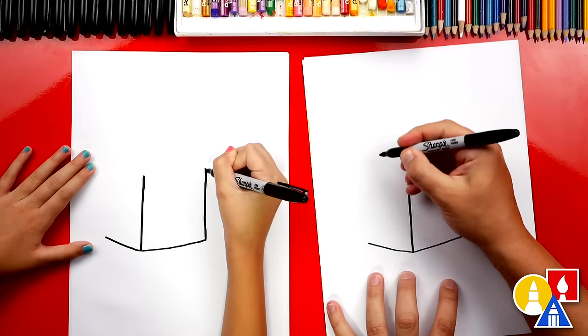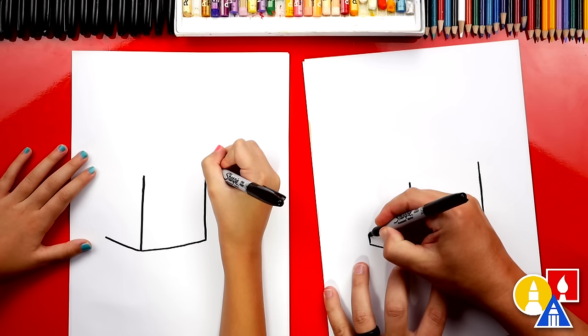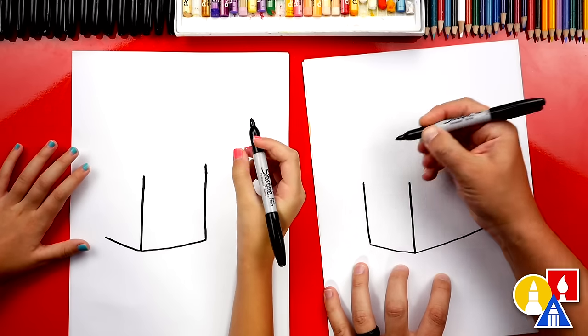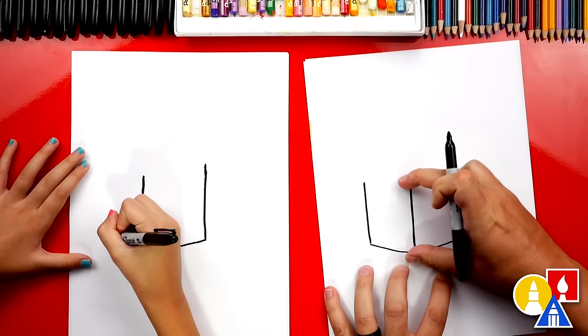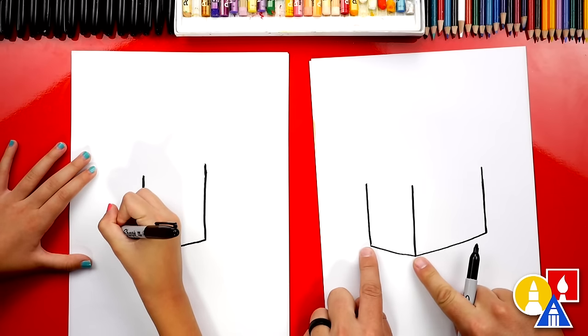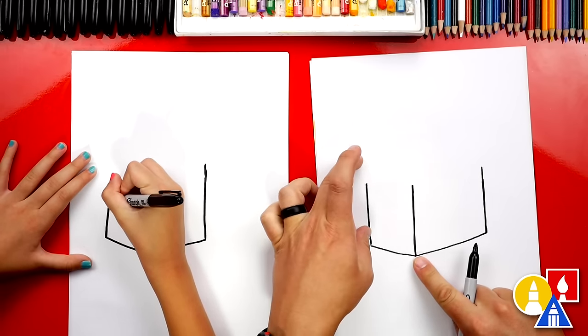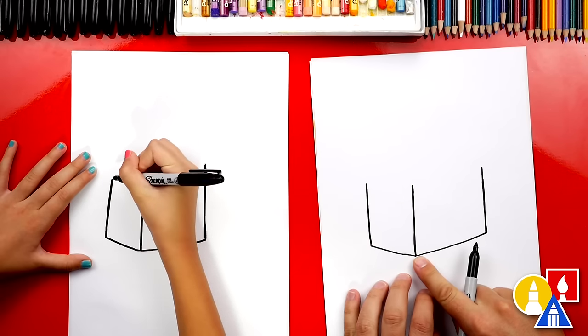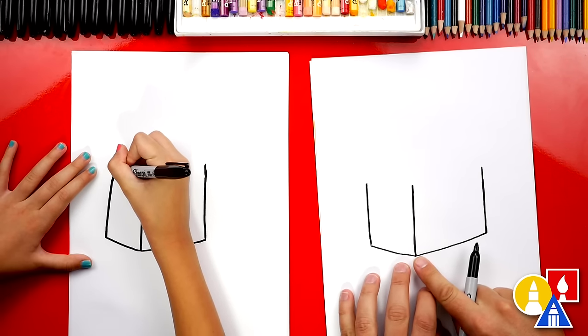And we're gonna do the same thing over here. We're gonna draw a straight line going up and we want it to be slightly higher. We want to measure. See how the diagonal line down here makes it so that the line is higher. Kind of tricky.